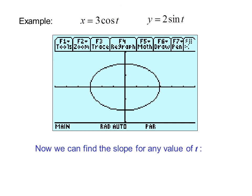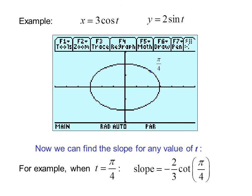Now we can find the slope for any value of t. For example, when t equals π/4, the point is on the ellipse. The slope is negative 2/3 times cotangent(π/4), which is negative 2/3. So the slope of the tangent line at that point is negative 2/3.